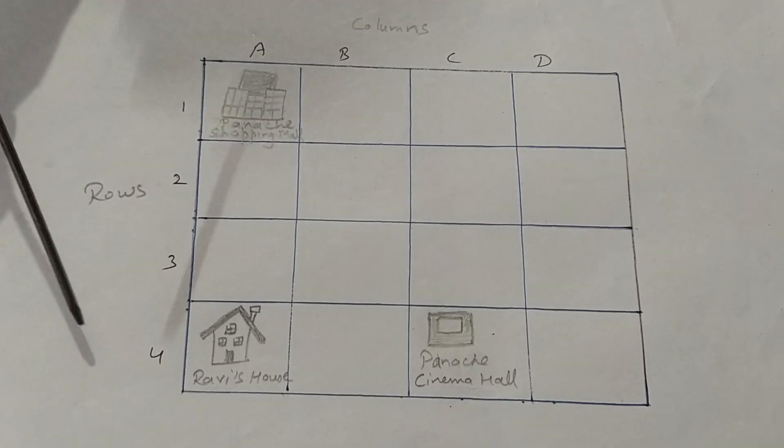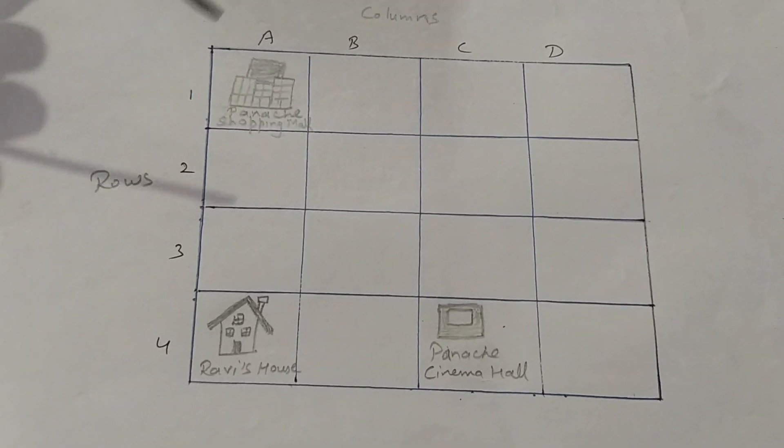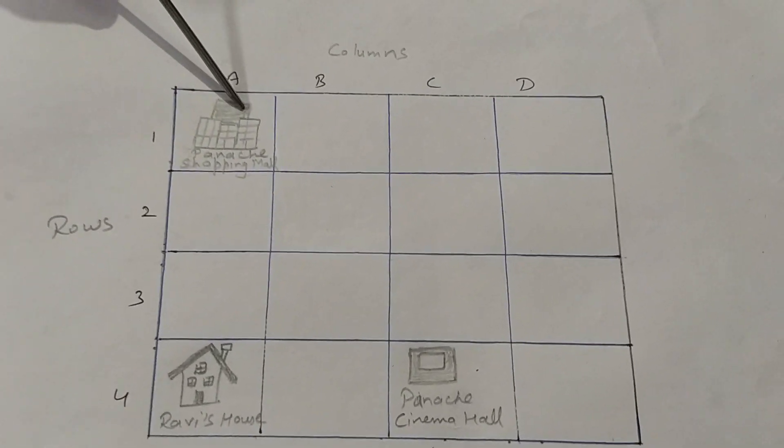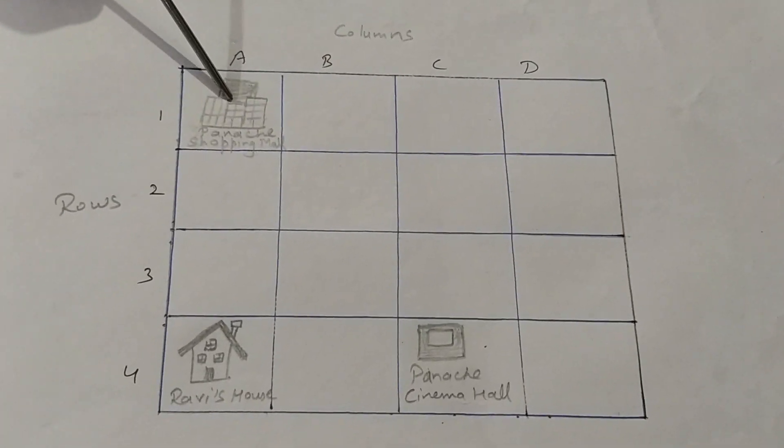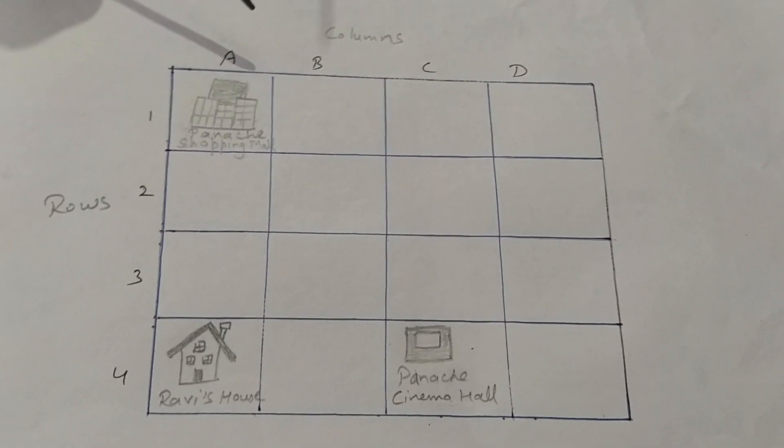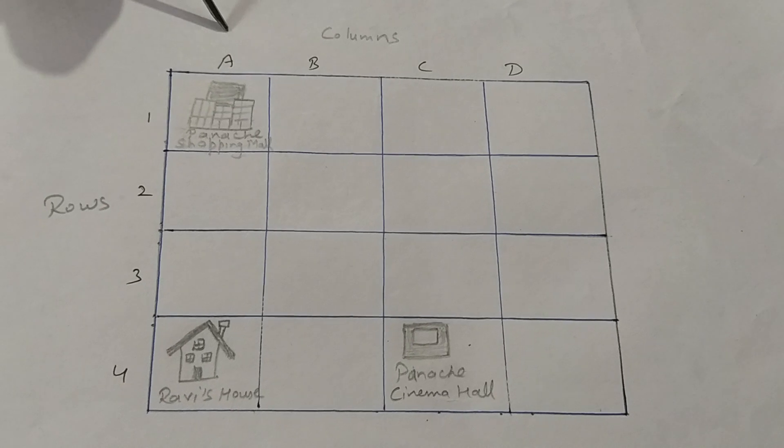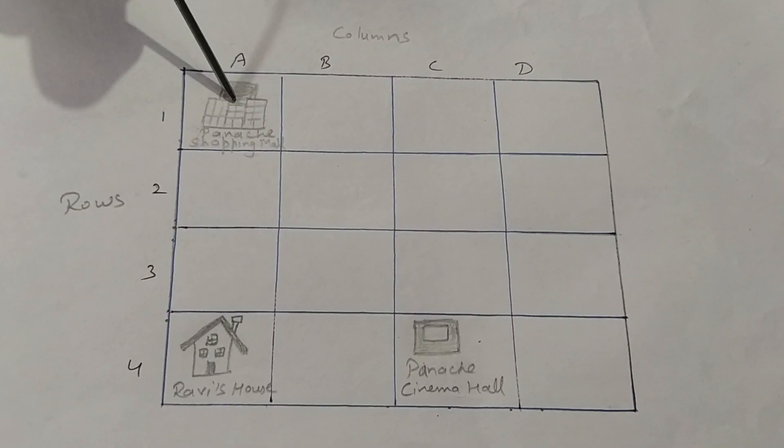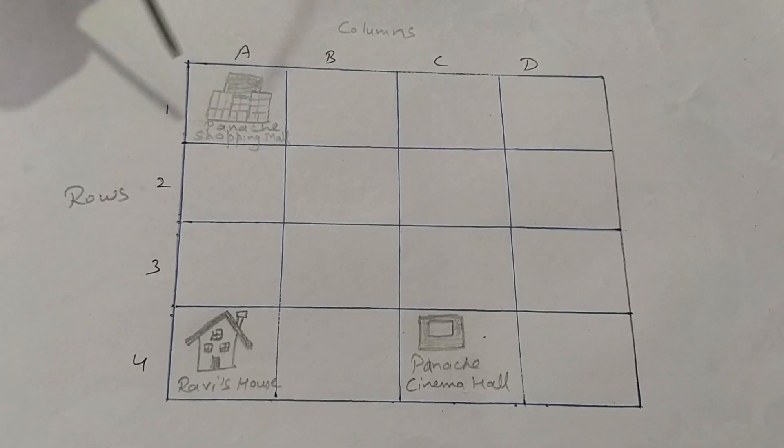Now, you see in your book, Panache Shopping Mall. This is the Panache Shopping Mall. If you have to find out about it, you will see first of all it's in column A and row 1. So, this grid box is known as A1.